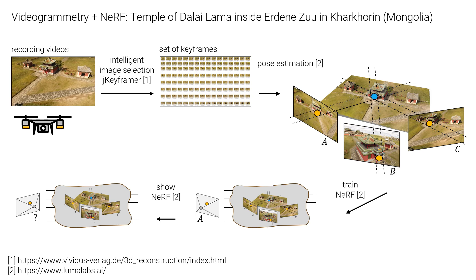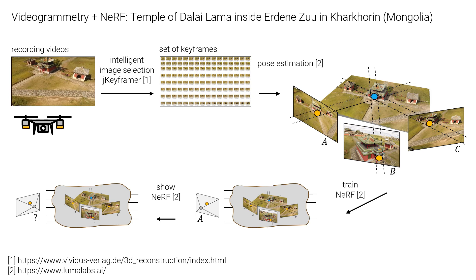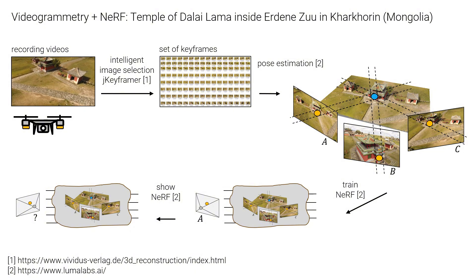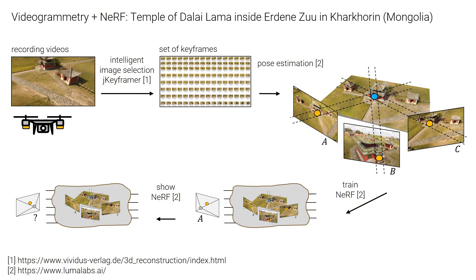In the second step, the trained neural network can synthesize images that are known, but also those that can be seen from unknown positions. This represents a new type of visualization.